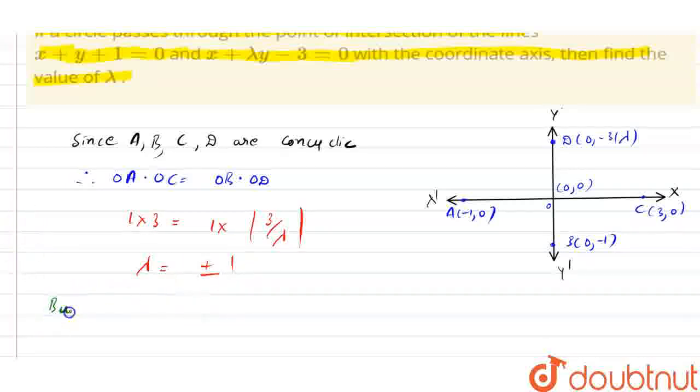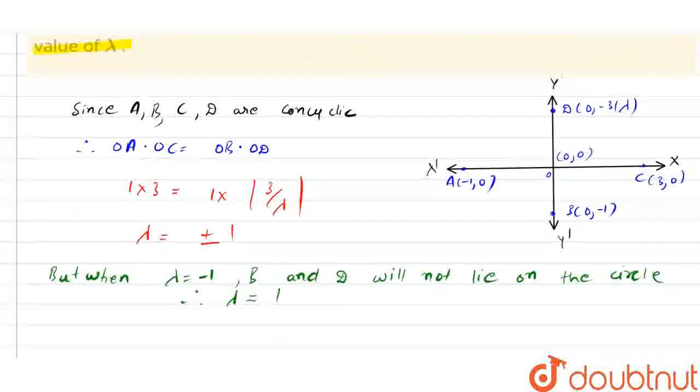But when lambda is equal to minus 1, then we can say B and D will not lie on this circle. Therefore, we can say the value of lambda we have equals to 1. So finally our value of lambda that we have the required is equal to 1. This will be our final answer.